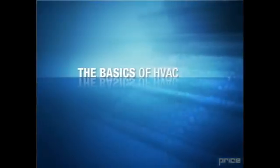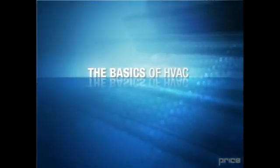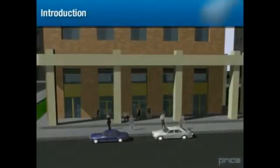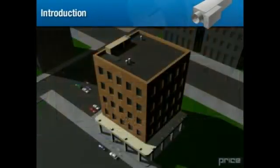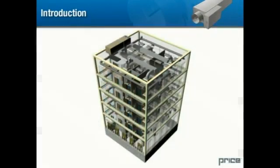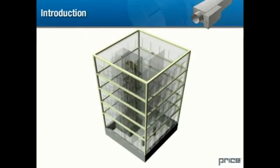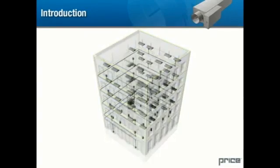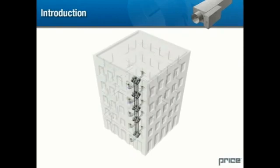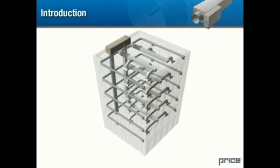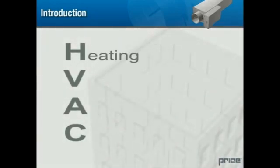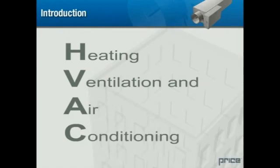The Basics of HVAC. The modern commercial or office building consists of many sophisticated systems. These systems include foundation and support structures, electrical and lighting, and plumbing and fixtures. Another major part of any building that is often taken for granted by its inhabitants is the HVAC system. HVAC stands for heating, ventilation, and air conditioning.